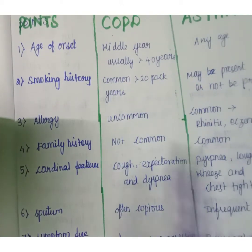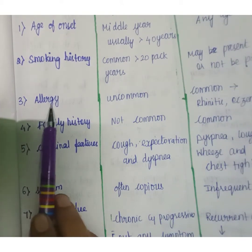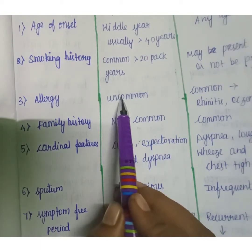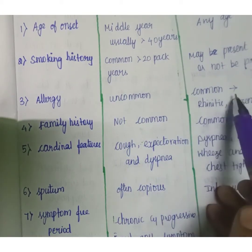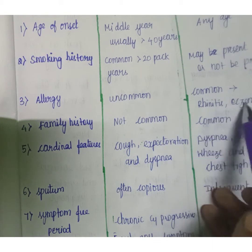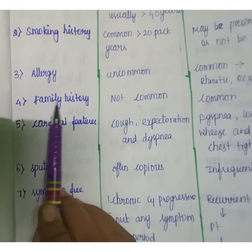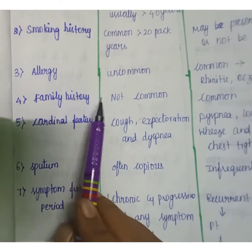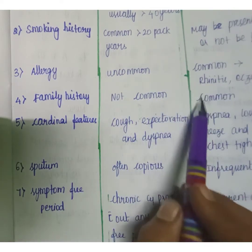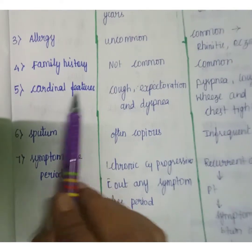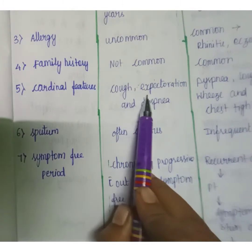For allergy, in COPD it is uncommon, whereas in asthma, allergy is common — including rhinitis and eczema. For family history, COPD is not commonly associated with a family history, while in asthma, a positive family history is common.